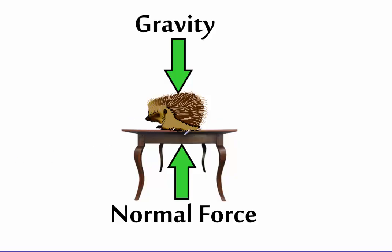Here we have a hedgehog sitting on a table. Gravity is pulling down on that hedgehog. Now, if gravity was the only force, this hedgehog would be falling down and accelerating. But he's not — he's just sitting there, not moving at all. So we know the forces on him must be balanced; he's at a constant speed. That other force is what we call the normal force. The normal force resists gravity — however much gravity is pulling down, the normal force pushes back up to match it. So whenever you're standing on the ground, gravity pulls down with a certain force, but the normal force pushes back up with an equal amount.